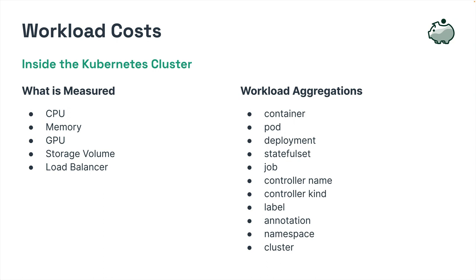Workload costs are committed allocated costs—this is what's happening inside your Kubernetes cluster. They've been requested from the Kubernetes cluster, so you're paying for them. From the Cloud Provider Billing API, we get the raw metrics on the left that you're paying for. OpenCost allows you to view these costs by workload aggregations on the right. You can see CPU usage by labels, GPU by deployments—however you want to query your costs. You can also stack these, so you could see things such as container per namespace.